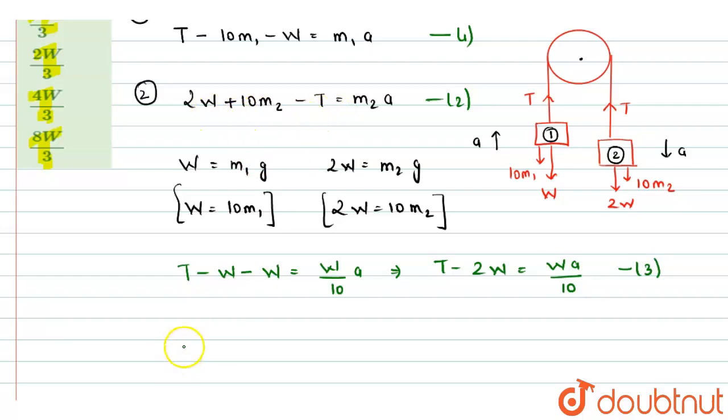And for equation 2, I can rewrite as 2w plus 2w, this 10 m2 I can replace by 2w, minus T equals to this m2, I can replace by 2w by 10 times of a. And finally this equation can be written as 4w minus T equals to 2w a by 10. Let this be equation number 4.